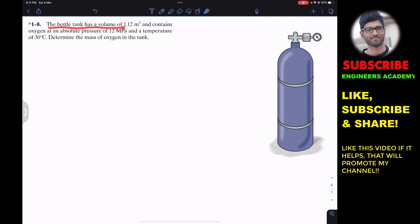The problem says that the bottle tank has a volume of 1.12 meter cube and contains oxygen at an absolute pressure of 12 megapascal and a temperature of 30 degrees Celsius. We are required to determine the mass of the oxygen in this particular tank.